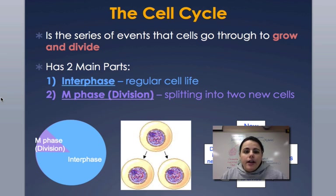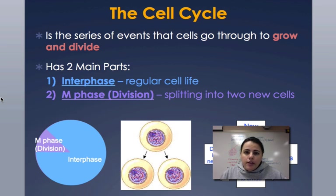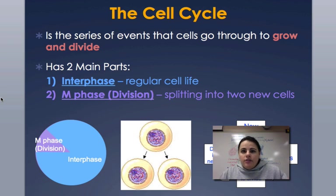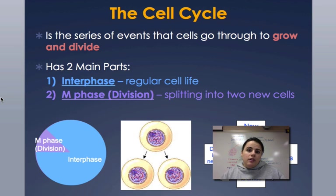The cell cycle has two main parts. The first part is called interphase, and that's just kind of the cell doing its normal thing. And then the second part is called M phase, known as division — you probably know it as mitosis — the different stages that a cell goes through in order to equally divide everything, particularly the DNA, and split into two new cells.